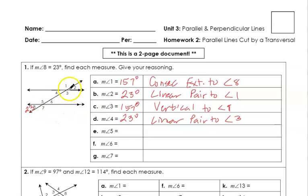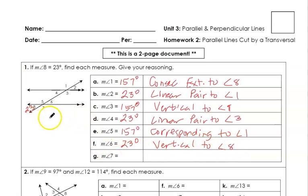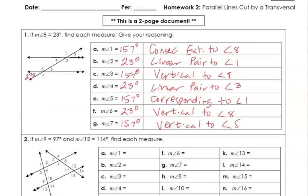Angle 5 is corresponding to angle 1, so it's 157 degrees — corresponding to angle 1. Angle 6 is vertical to angle 8, so that's 23 degrees; they're congruent. Angle 7 is vertical to 5, or forms a linear pair with 8 or 6 — either way it's 157 degrees, vertical to angle 5. That takes care of that first set of problems.